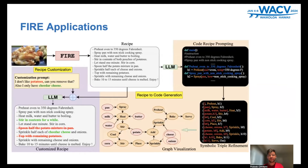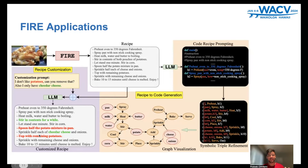Now we talk about the applications of FIRE. The first one is recipe customization. Once we have an output from FIRE, which is a recipe, we pass it to an LLM with a certain prompt. For example, in this particular recipe, suppose I don't like potatoes and I want to add some cheese. I add this particular prompt along with the recipe, and then I have the customized output. Here you can see that the items containing potatoes have been removed and cheese has been added.